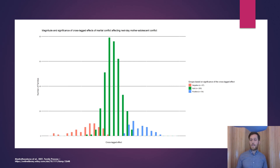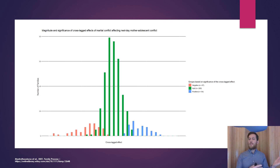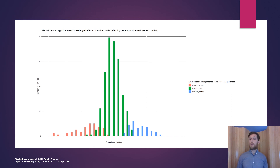For example, assuming marital conflict happens on Monday: for most families this had no effect whatsoever on whether parent-child conflict would happen on Tuesday. But for some families there was a positive association — meaning Monday's marital conflict increased the chances for Tuesday's parent-child conflict — or a decrease, depending on which group the family belonged to.